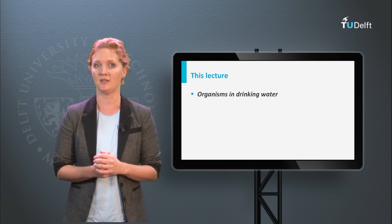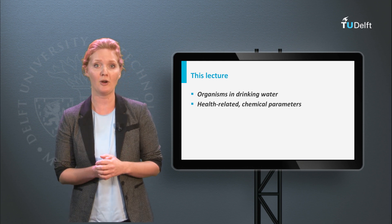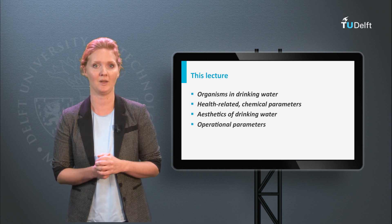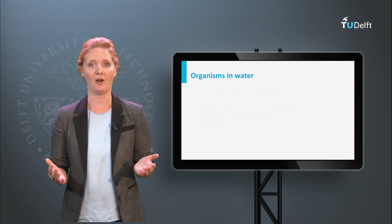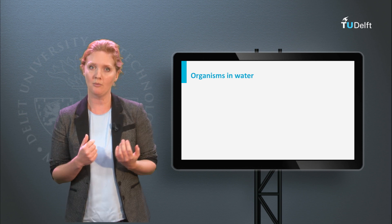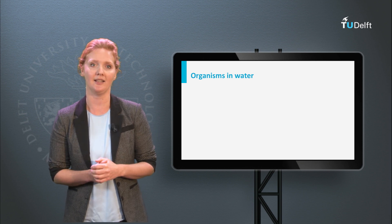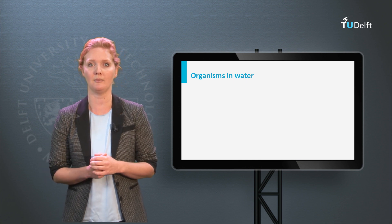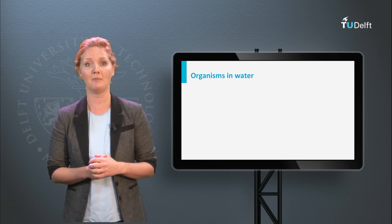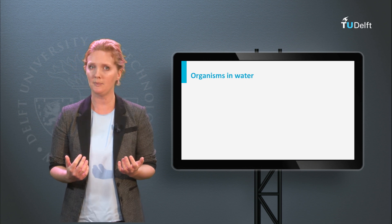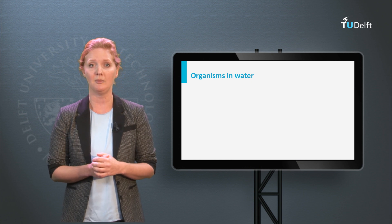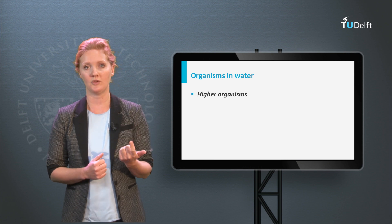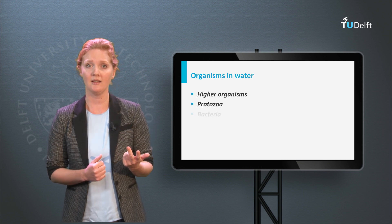First: organisms in drinking water, health-related chemical parameters, aesthetics of drinking water, and operational parameters. The first group of key compounds in water consists of living creatures, which you most often cannot see with the naked eye. In nature, water contains all kinds of organisms in large numbers, and also in drinking water many different organisms are found. These organisms can be divided based on size into four groups: higher organisms, protozoa, bacteria and viruses.